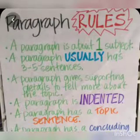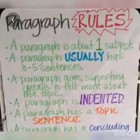Moving forward, we can discuss the rules to be kept in mind while writing a paragraph. The paragraph is about one subject — you need not change the topic. It usually has 3 to 5 sentences in a short paragraph, but when you write an 80-word paragraph, you need to write 8 to 10 lines. A paragraph gives supporting details to tell more about the topic, as we have discussed regarding computer technology. A paragraph is also indented, meaning some space from the margin has to be left while starting the paragraph. A paragraph has a topic sentence, as discussed in the previous slide, and a paragraph has a concluding sentence as well.